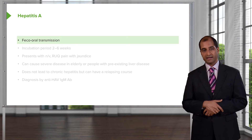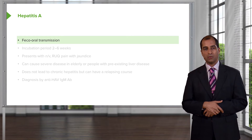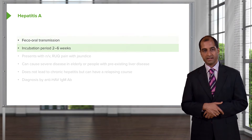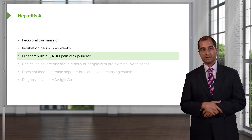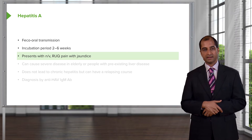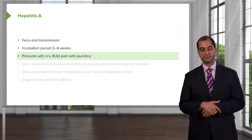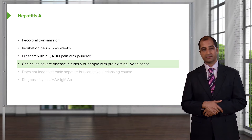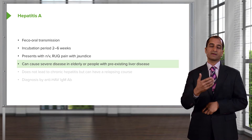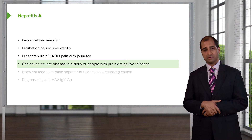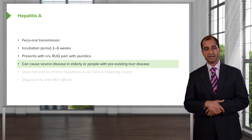Beginning with hepatitis A — it is acute. Transmission is fecal-oral, with an incubation period of about two to six weeks. It presents with nausea and vomiting, and right upper quadrant pain with jaundice. Jaundice is a mixed picture, depending on how much damage is taking place to the liver. Clues on boards include elevated AST and ALT transaminases.